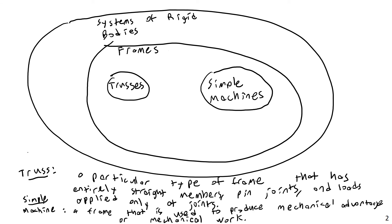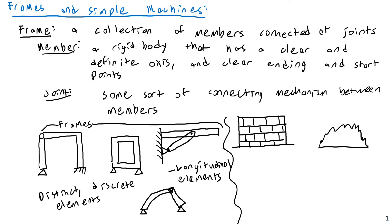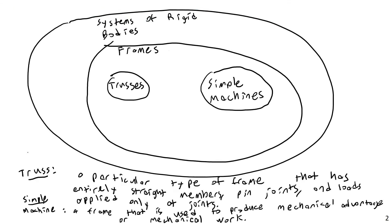So to summarize: frames, trusses, simple machines, joints, what is a frame, and what is not a frame. That'll do it for this portion of the lecture. This first video was a very brief introduction — a definitional video. In the next section, we're going to look at types of joints that can exist within frames. Let me know if you have any questions. I will see you soon for part two of lecture 11, and as always, thank you.